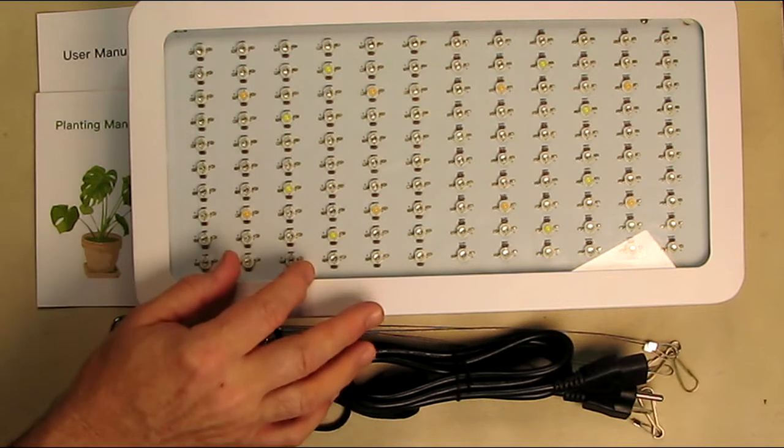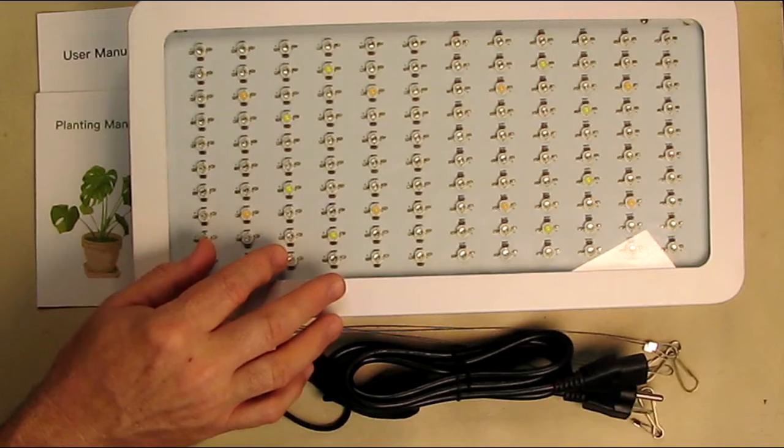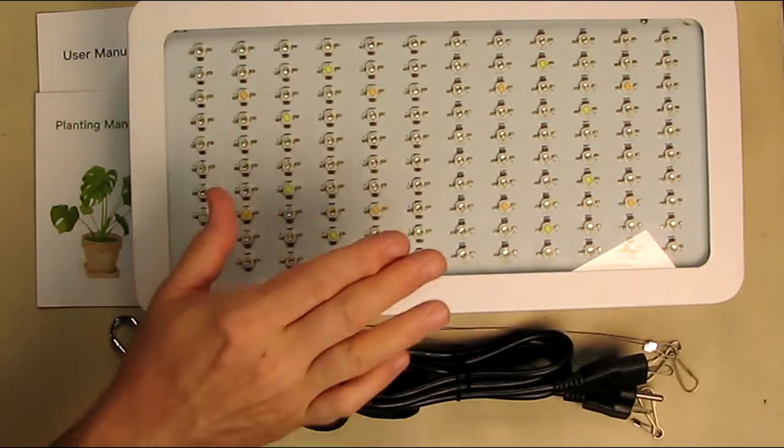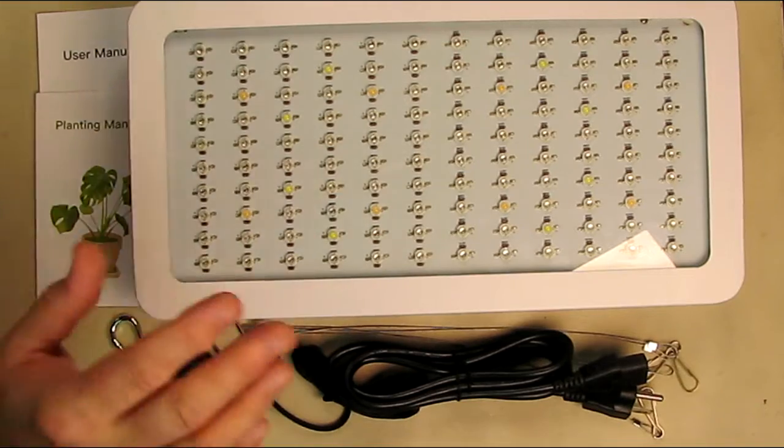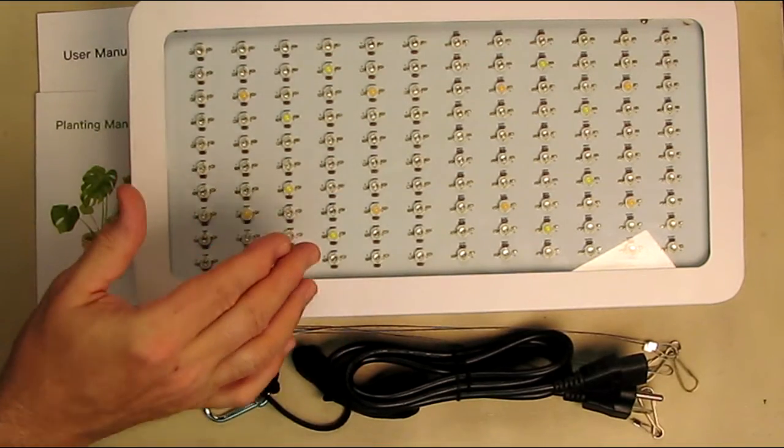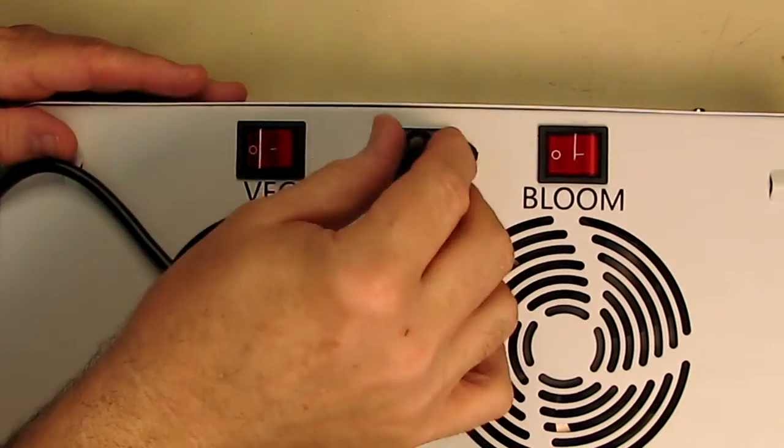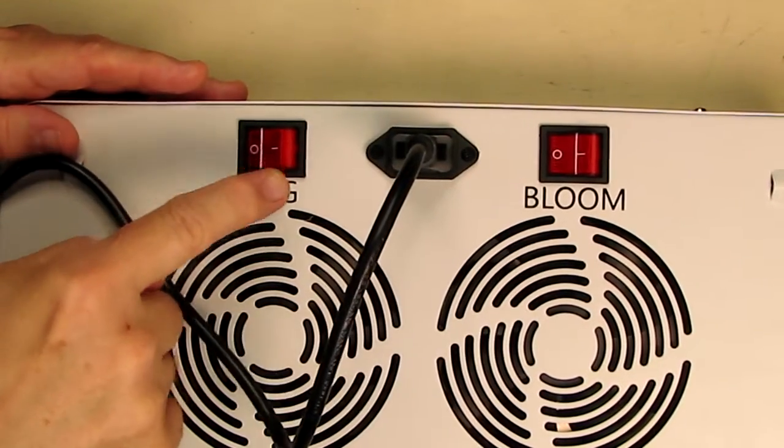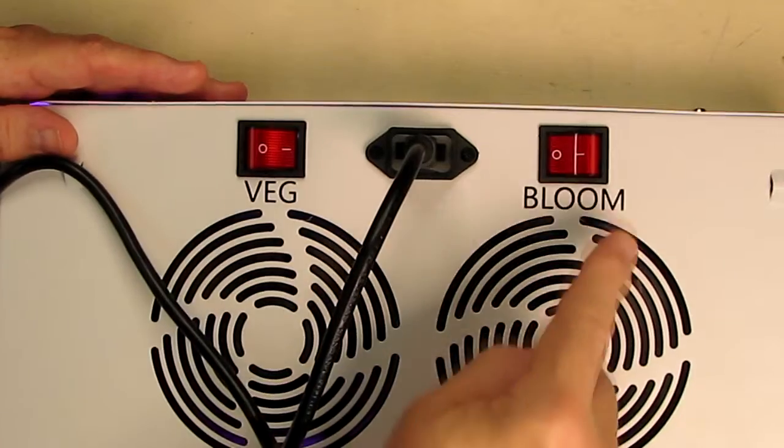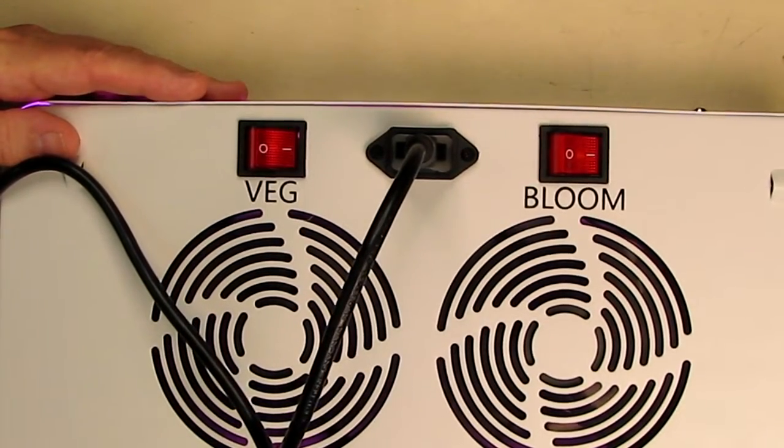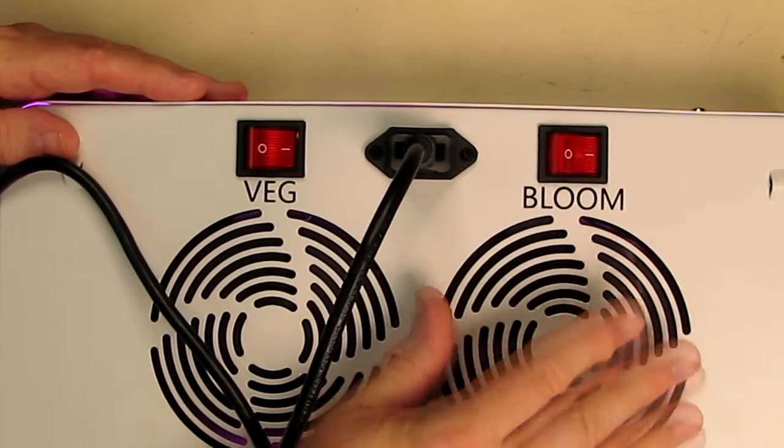There's also overcurrent protection as well as the overheating protection in there, so it's going to monitor the energy to the LEDs and scale them down if the current goes up or the temperature goes up like I mentioned. So it's very simple to use. You just plug it in with the included plug right there, and then you've got your power switches, veg and bloom, and then the fans come on and they start cooling.